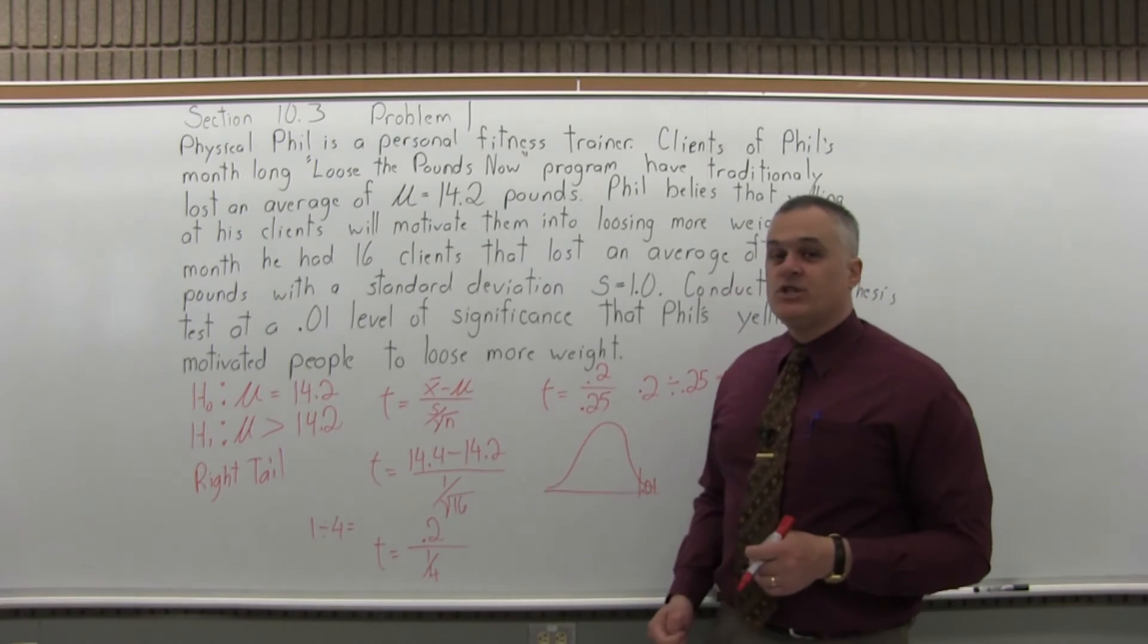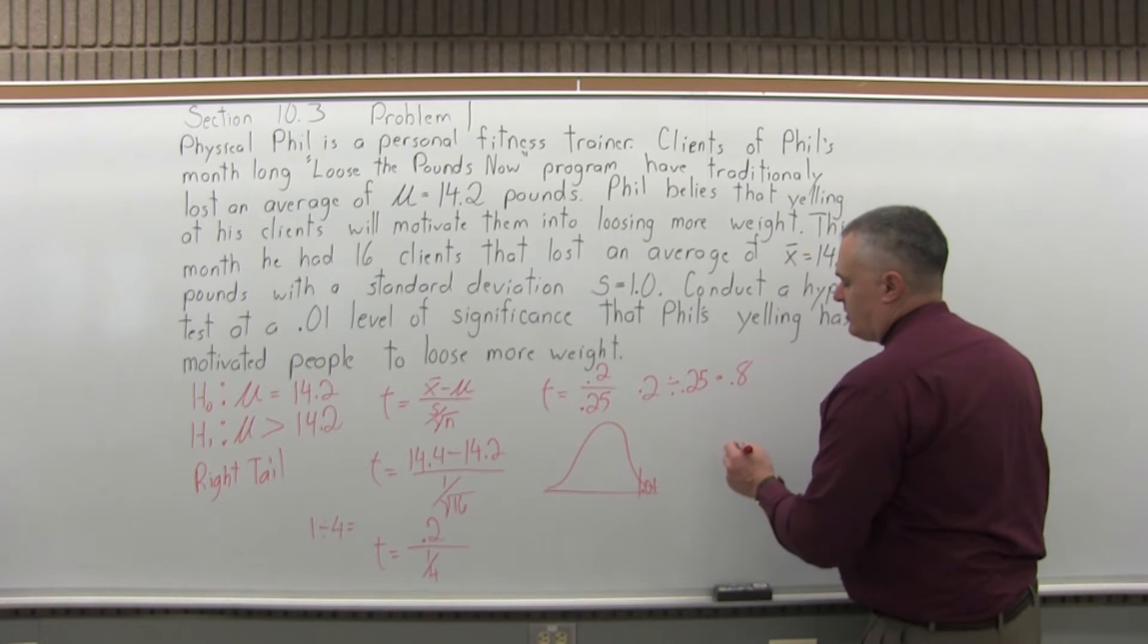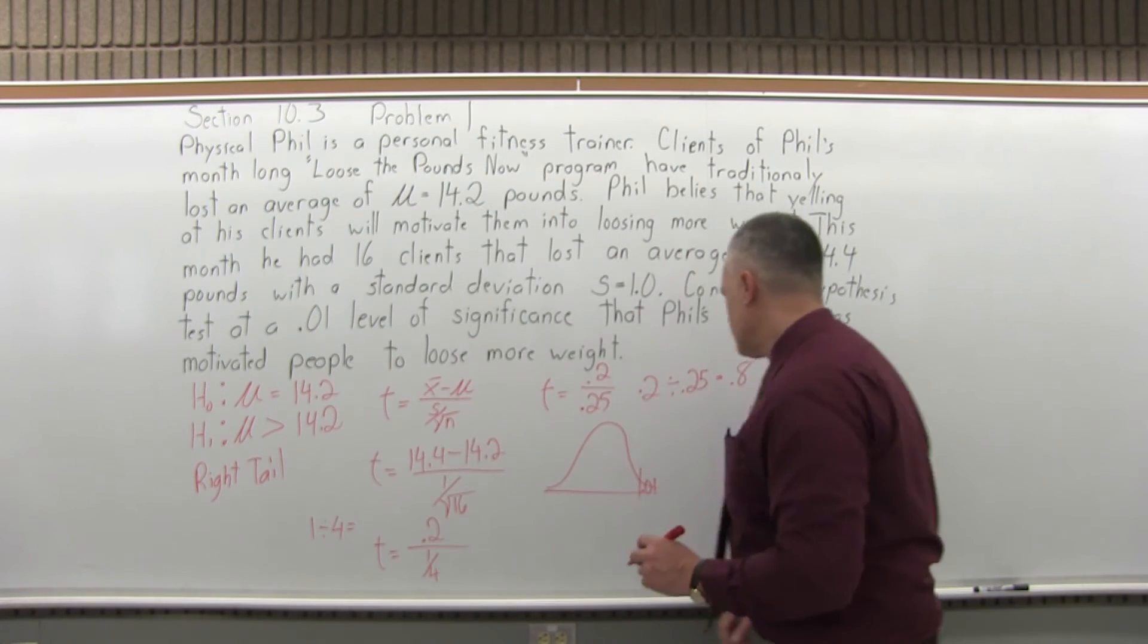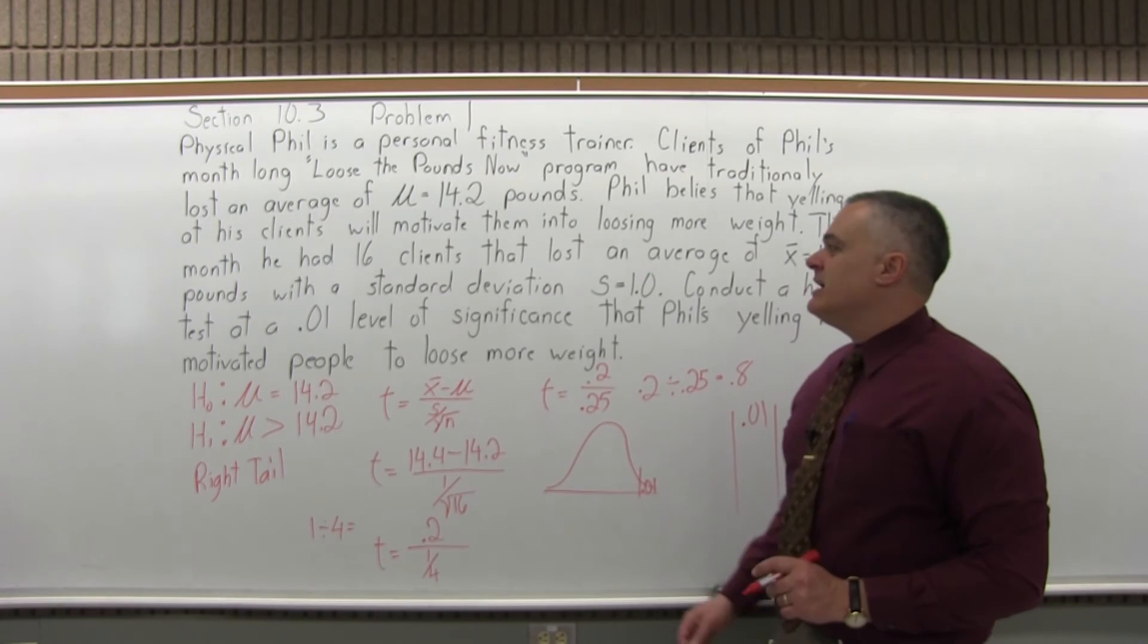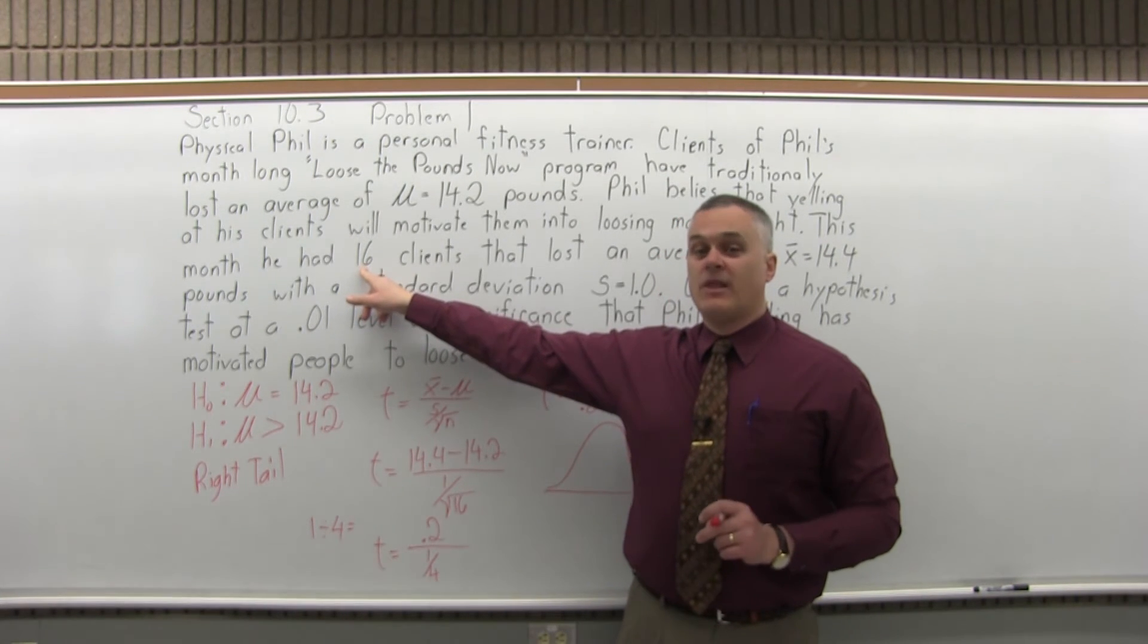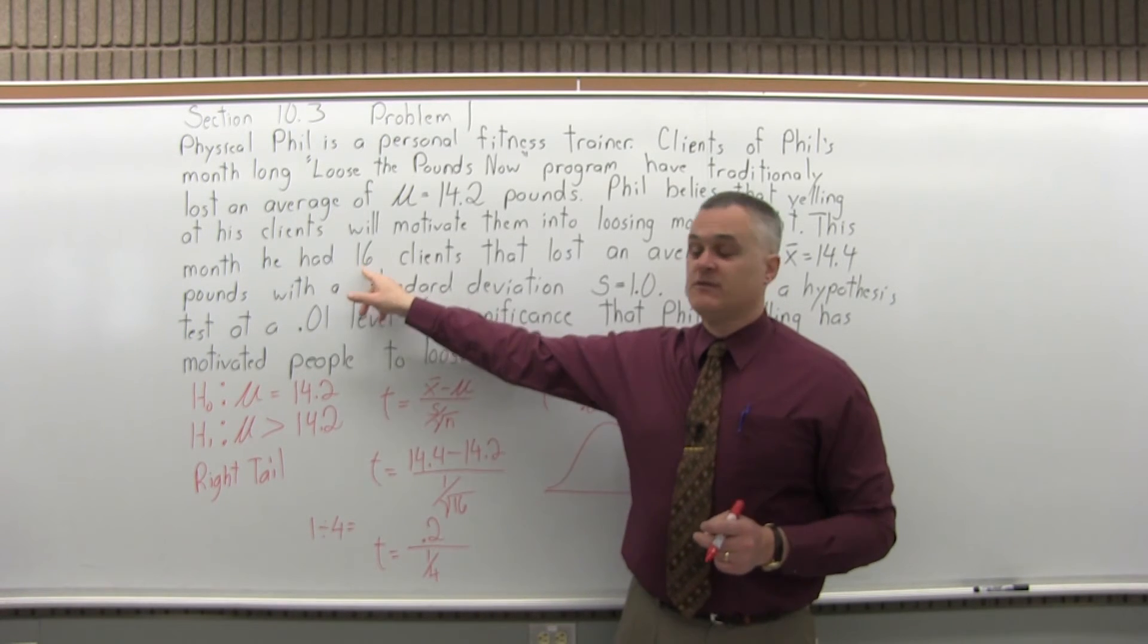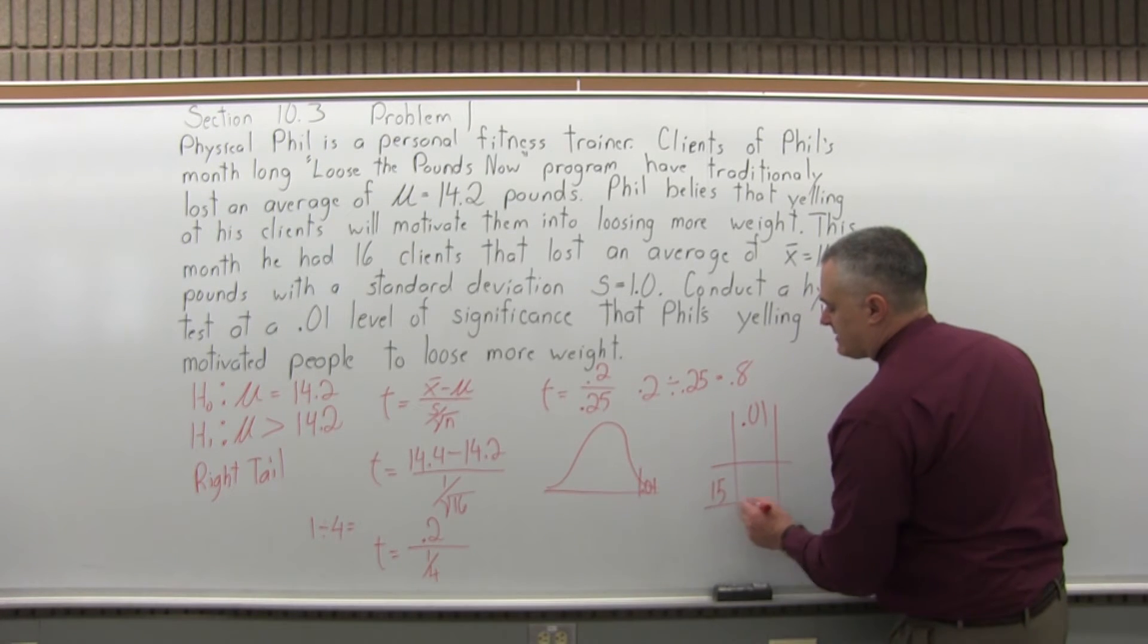You want to go to the T chart, the student's T chart, that's at the end of the homework. Find the 0.01 column, because that's the level of significance. And the row that you're going to look in is 15 degrees of freedom, one less than your sample size. Sample size is 16, so one less is 15. It's marked DF for degrees of freedom. You'll see where they intersect. And it intersects at the value of 2.602.